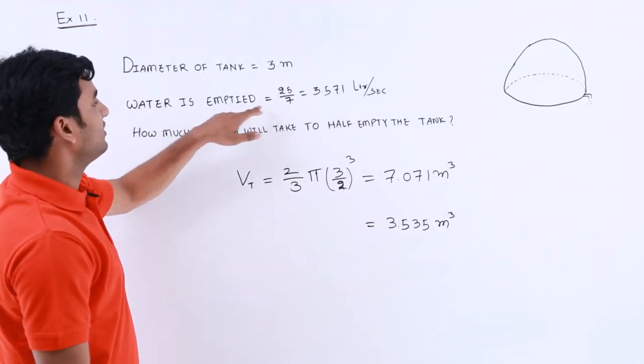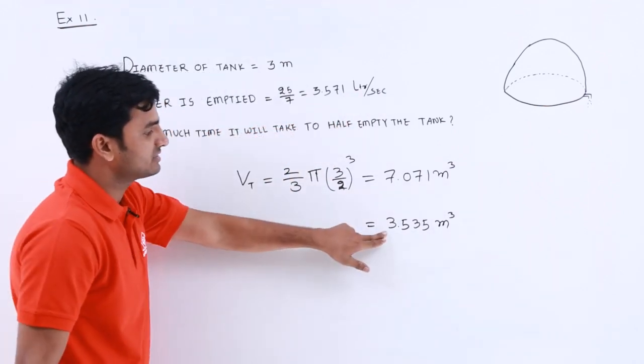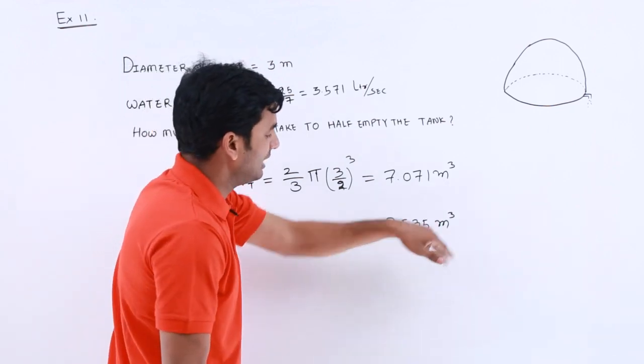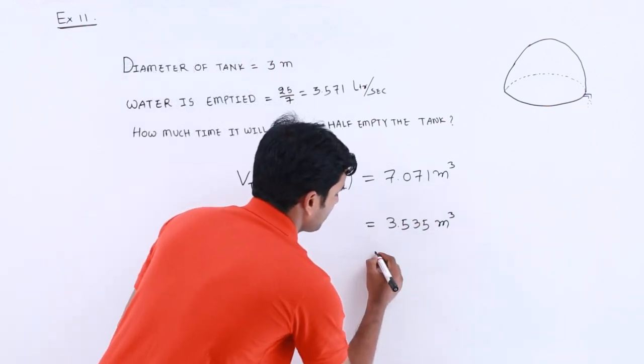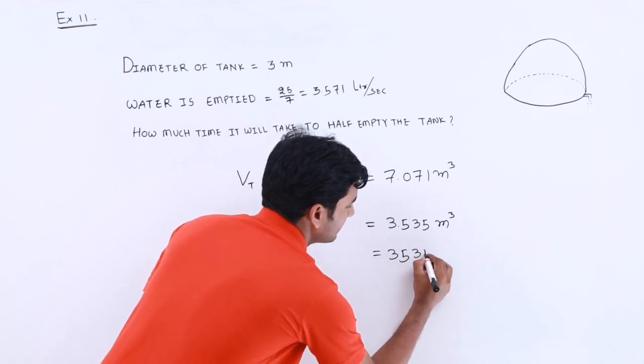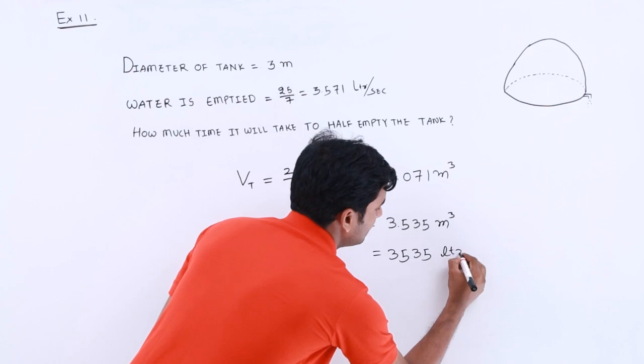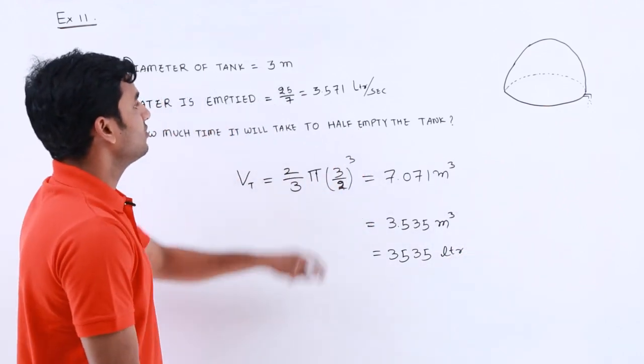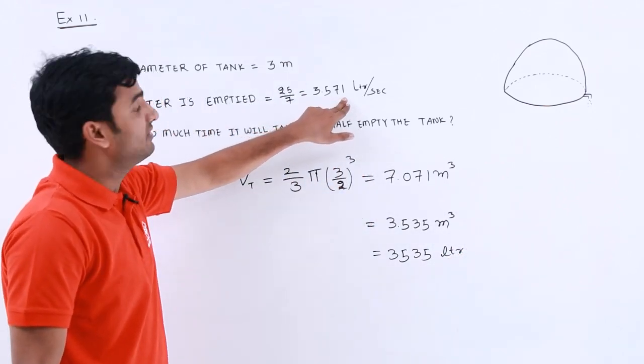Here the rate of emptying is given in liters, so if you want to convert this meter cube into liters, we have to multiply it with 1000. So it will become 3535 liters. So for 3.571 liters it will take 1 second.